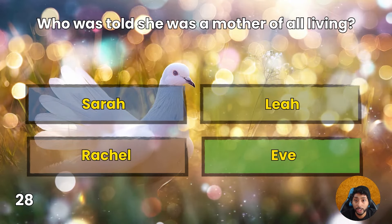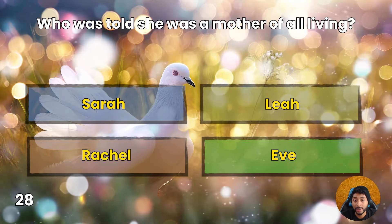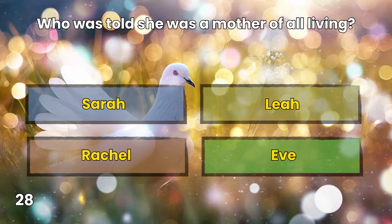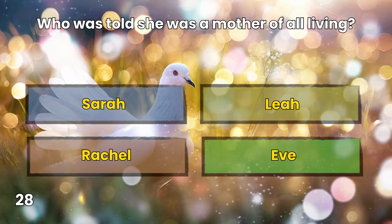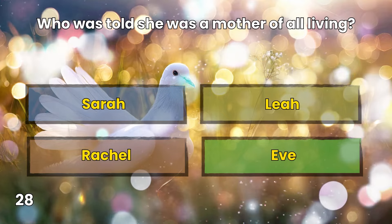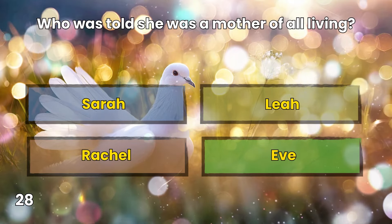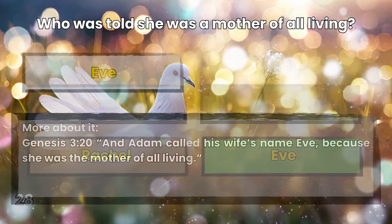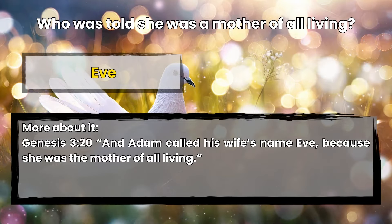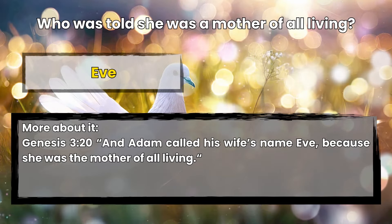Question 28: Who was told she was a mother of all living? Sarah, Leah, Rachel, or Eve? Eve. Genesis 3:20 — And Adam called his wife's name Eve, because she was the mother of all living.